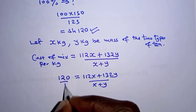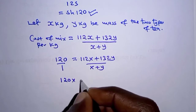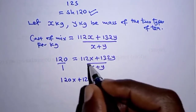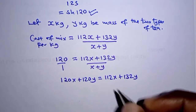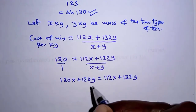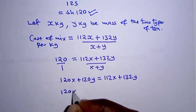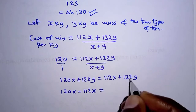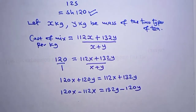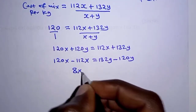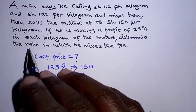We cross multiply: 120 times x plus y gives 120x plus 120y, and the right-hand side gives 112x plus 132y. Grouping x terms on the left and y terms on the right: 120x minus 112x on the left and 132y minus 120y on the right. Working out the left side gives 8x and the right side gives 12y.